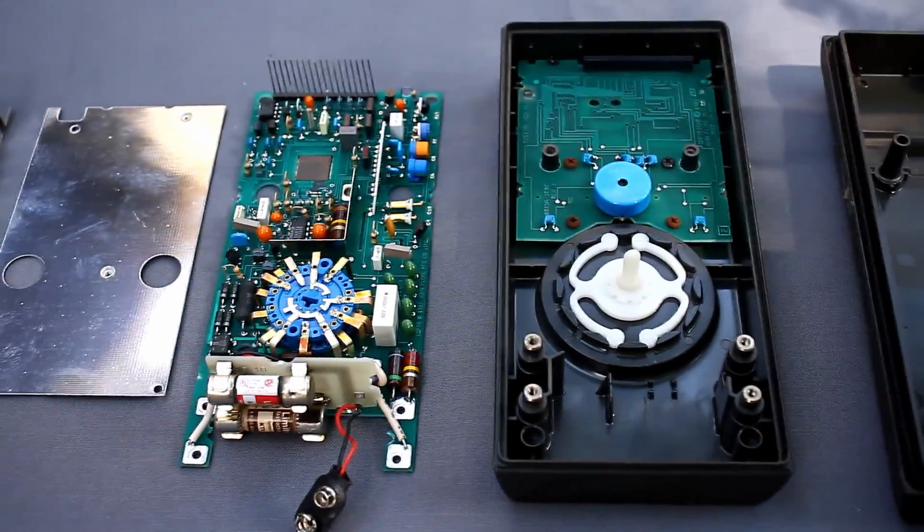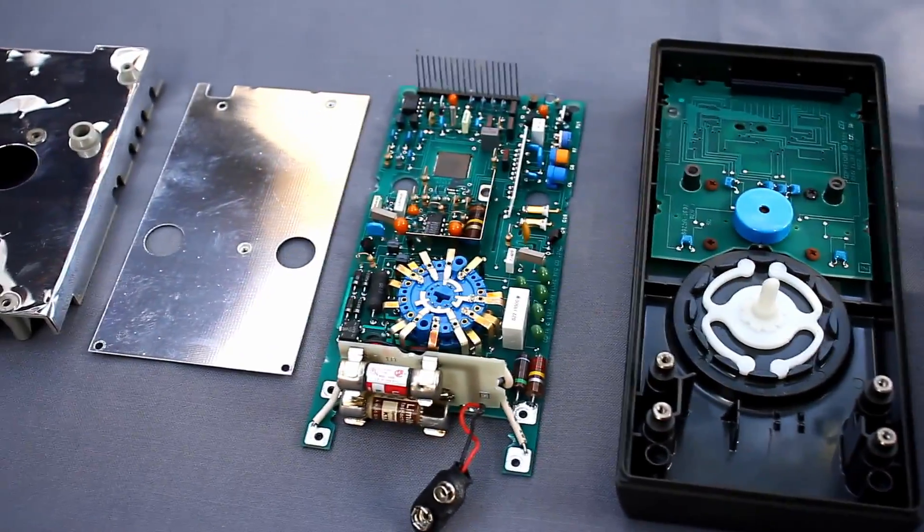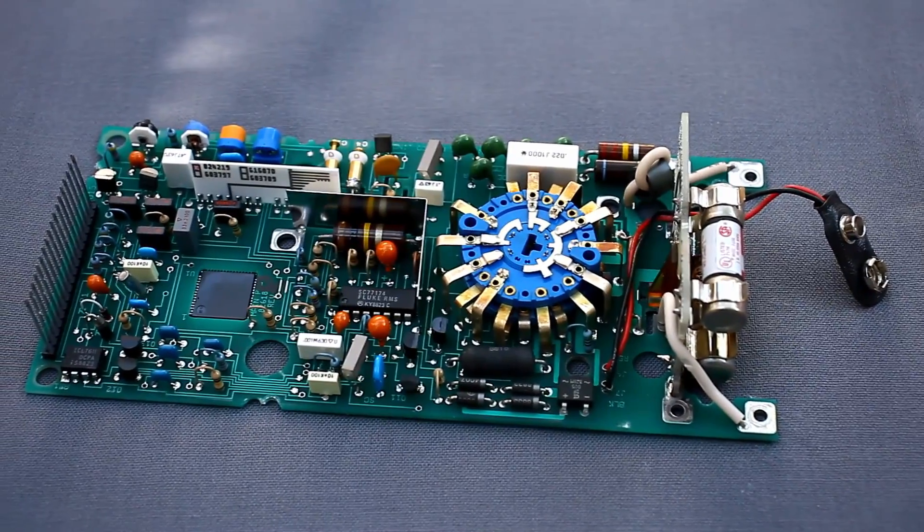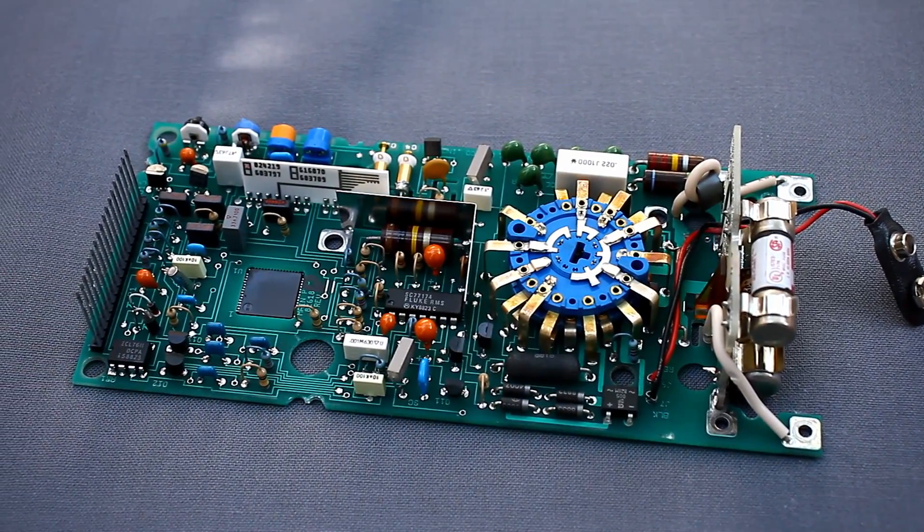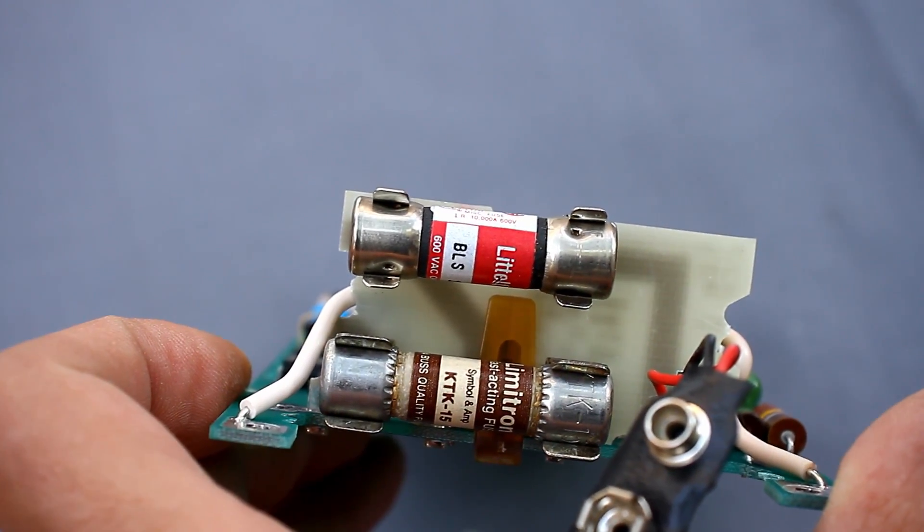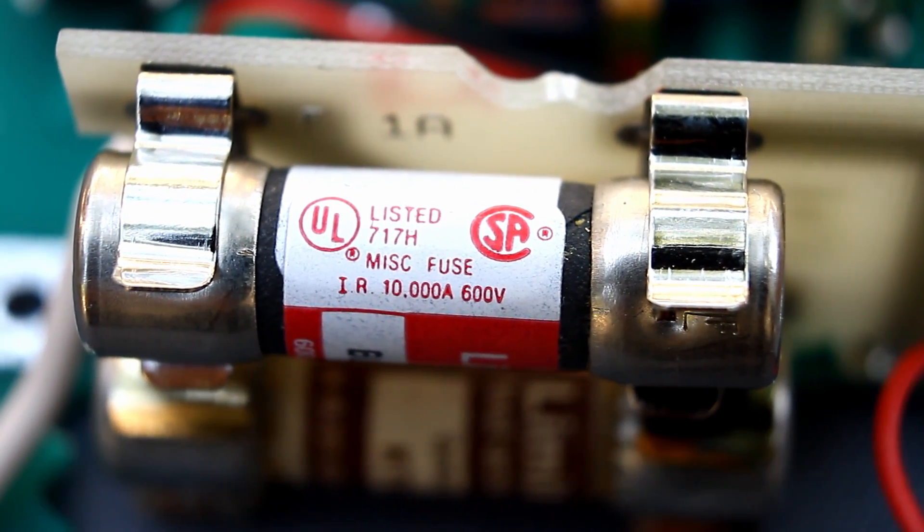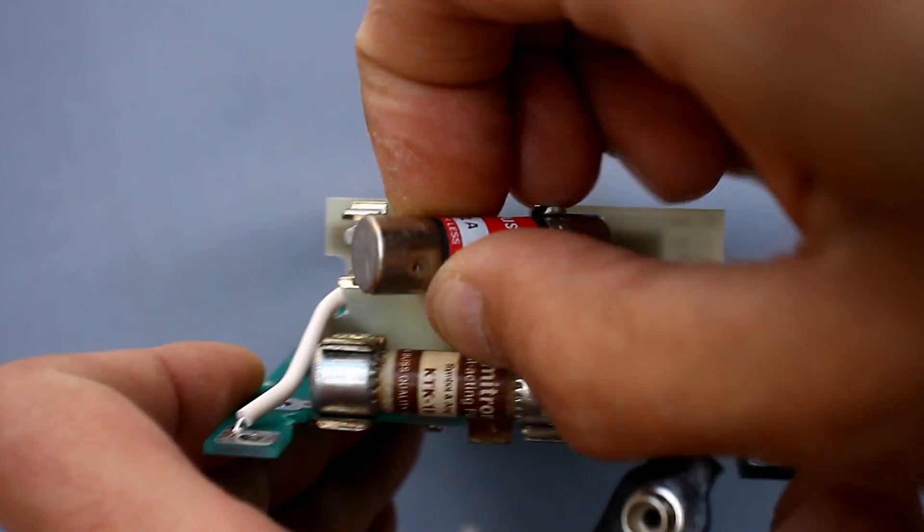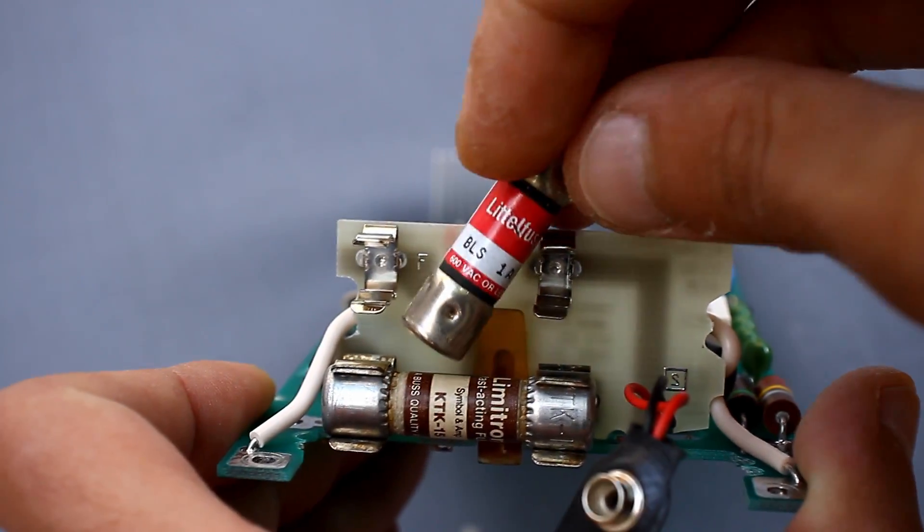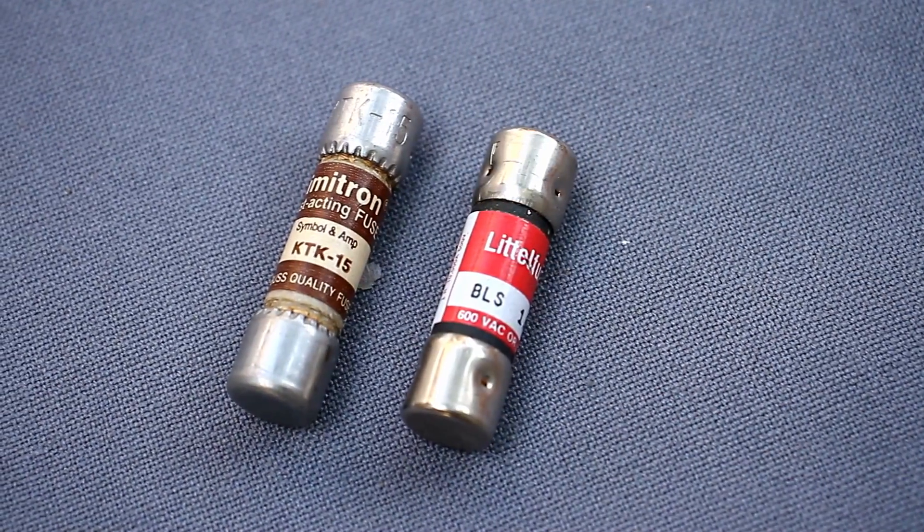It is also worth noting that all self-tapping screws that fix the box house have a rubber seal. In my opinion, the board is beautiful. There is free access to all components, maintainability is at high level. We see a vertical board with a pair of special class fuses. Such fuses are used in all multimeters from this company.